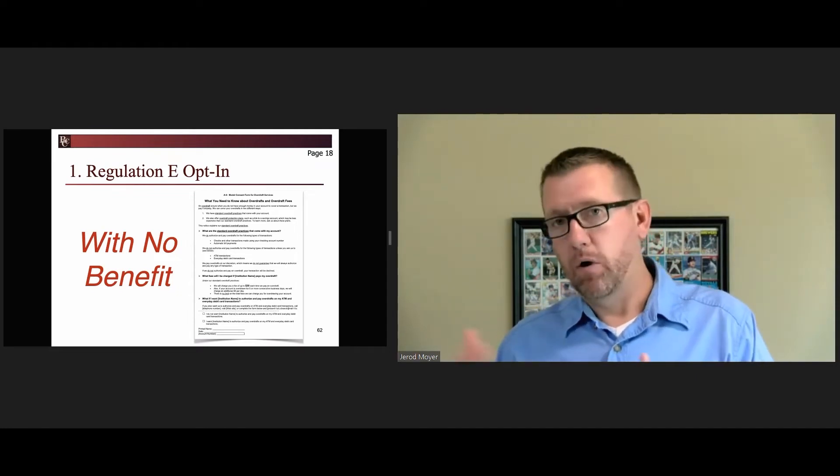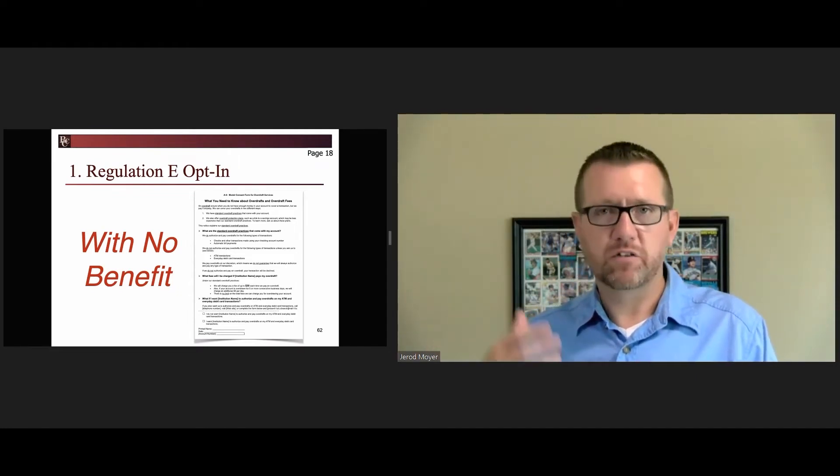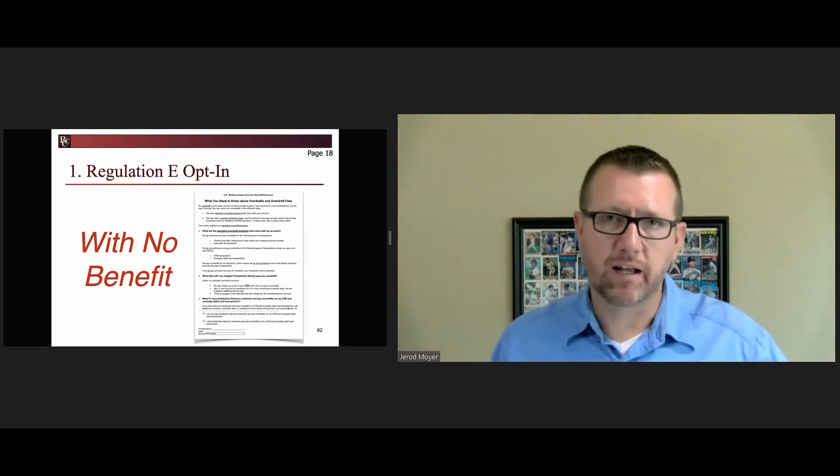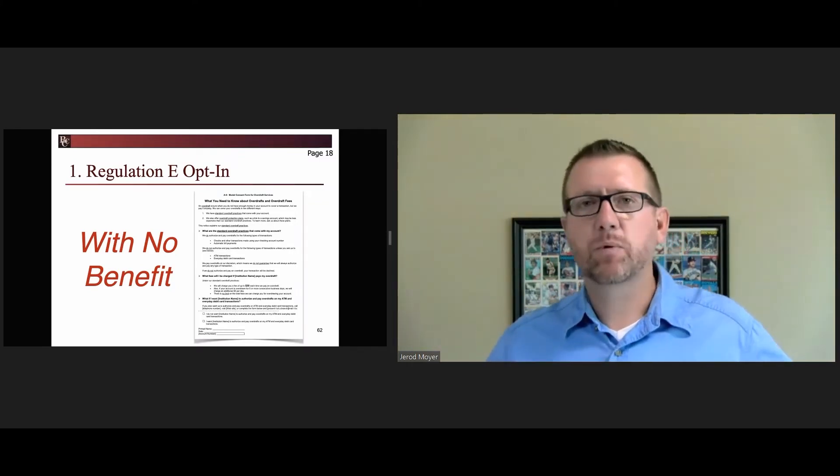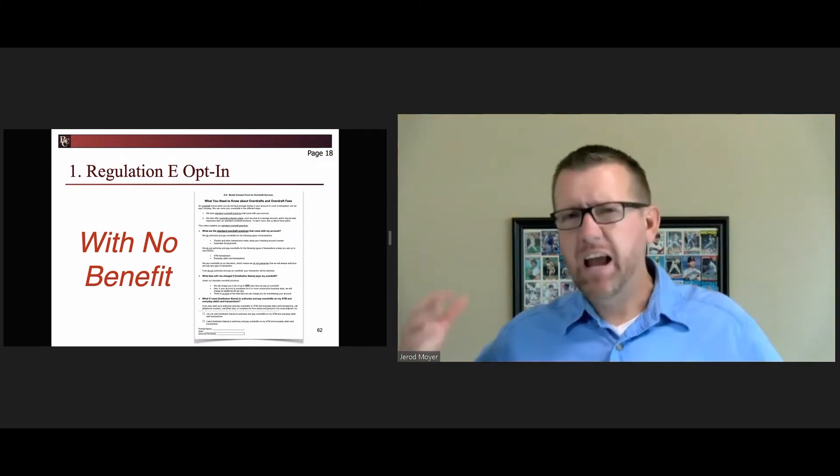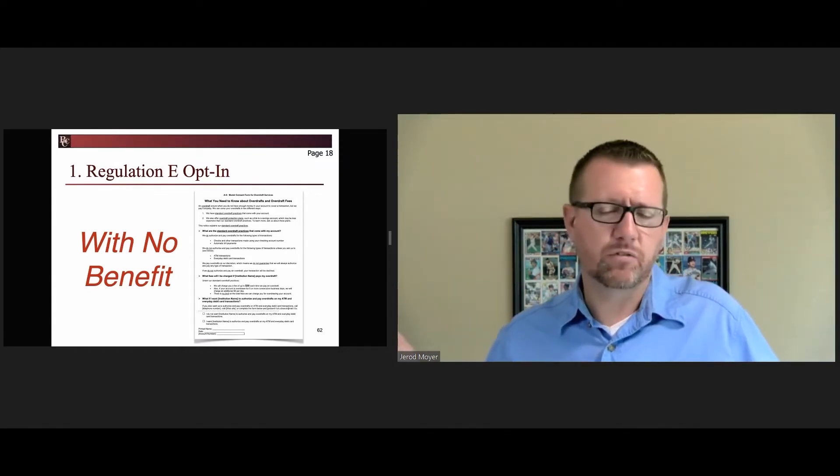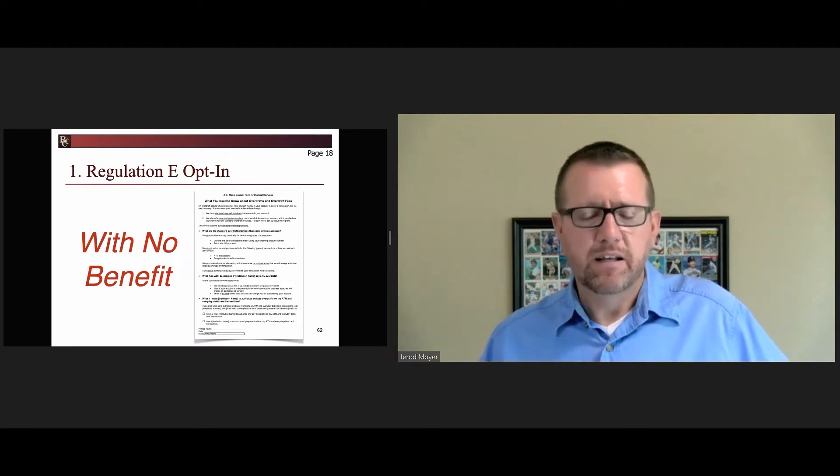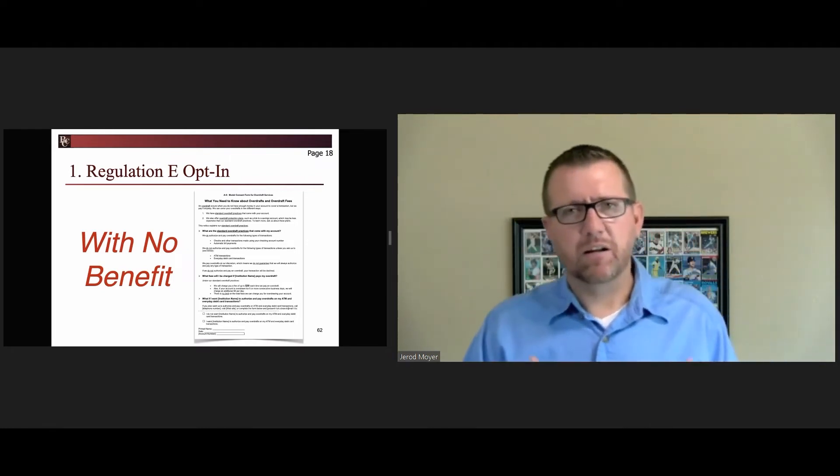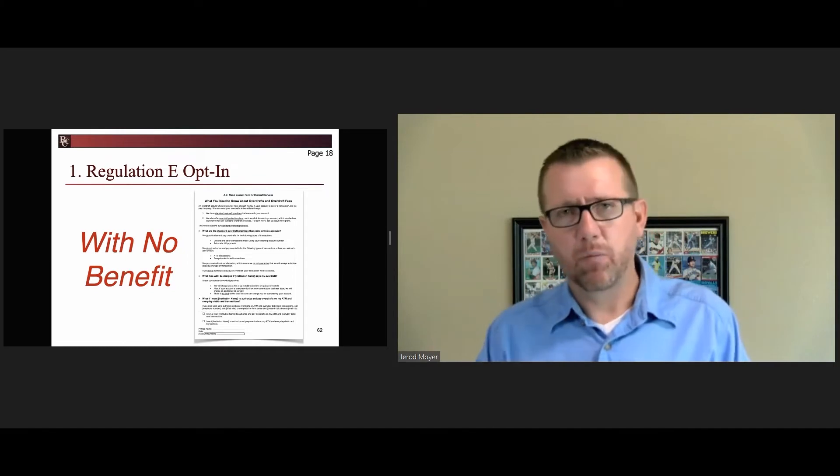If you don't opt in and you're at Walmart and you want to buy a $300 item and there's only $200 in your account, it's going to get declined. And that's the way it's got to be explained. But if I have $300 in my account and I want to buy a $300 item, it goes through whether you opt in or not. So you have to be able to clearly articulate what the opt-in is and how it works.